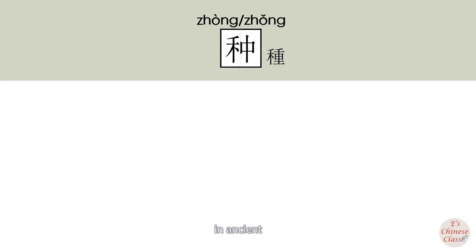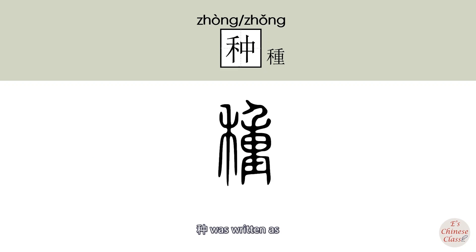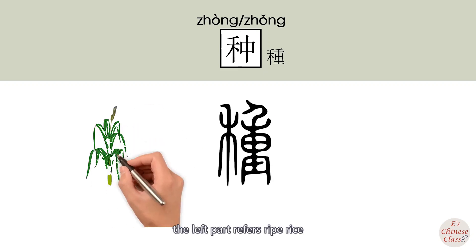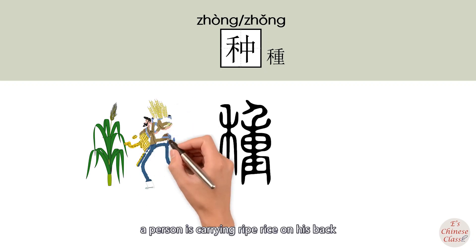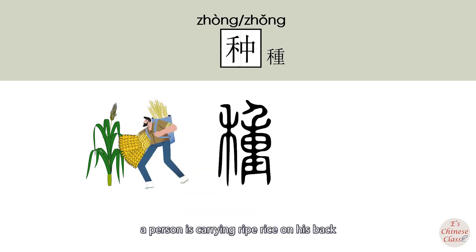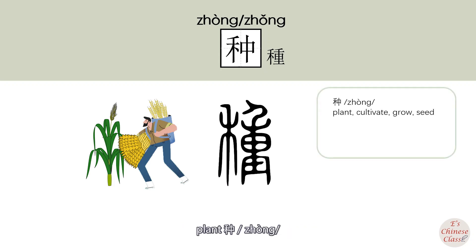In ancient Chinese, 中 was written in an older form. The left part refers to a flag or pole, and the right part shows a person carrying it on his back. So the original meaning of 中 is 'plant' or 'standard.'